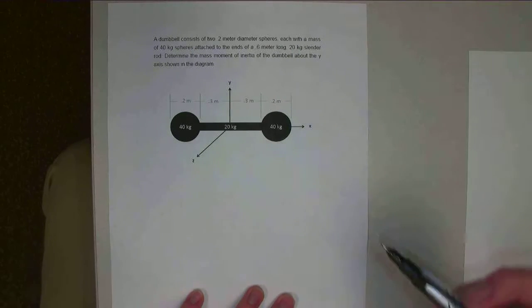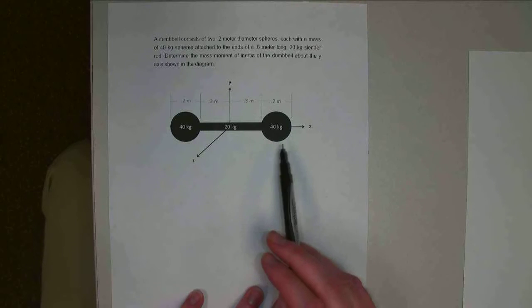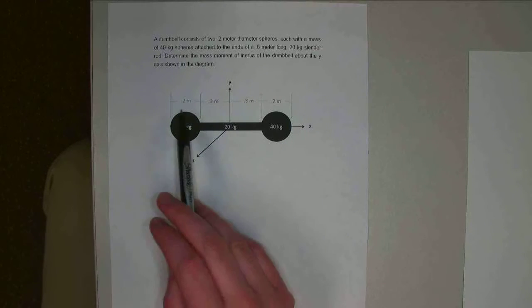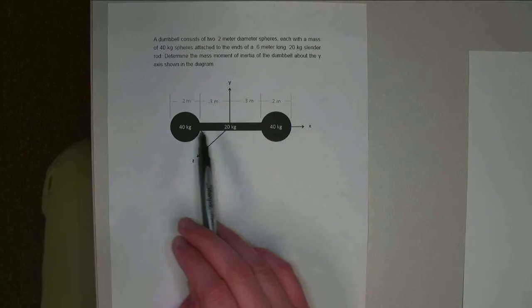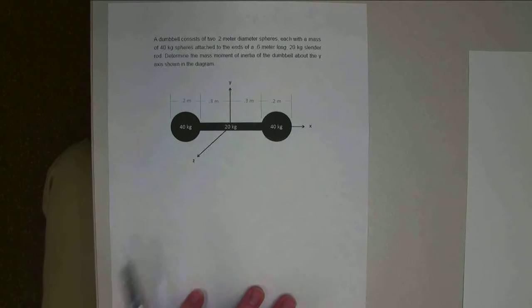Hello, for this problem we've got a dumbbell consisting of two 40-kilogram spheres, each with a diameter of 0.2 meters, and there's a 0.6-meter-long 20-kilogram slender shaft connecting these two.